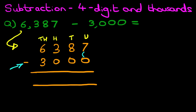What is 7 minus 0? That's right, it is 7. Tens column, 8 minus 0. That's right, that is 8.